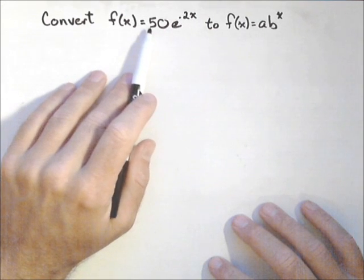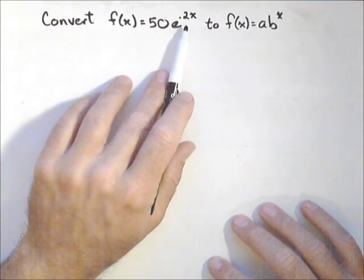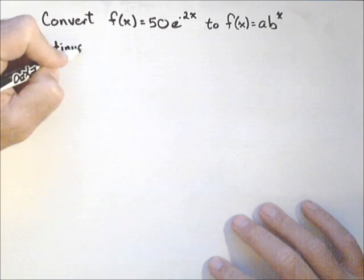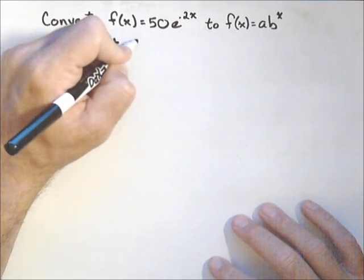So first off, in this form, we have an initial value of 50, and what we can think of as a continuous rate of 20%. So that's the information that we get from this form.